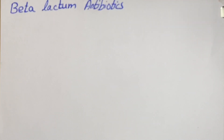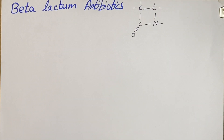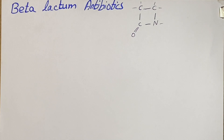Hello everyone. In today's video we are going to be talking about the mechanism of action of beta-lactam antibiotics. First of all we need to understand why these antibiotics are called beta-lactam. They are called beta-lactam antibiotics because they have a beta-lactam ring in them.